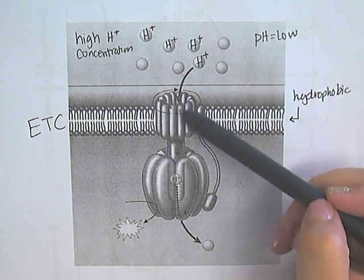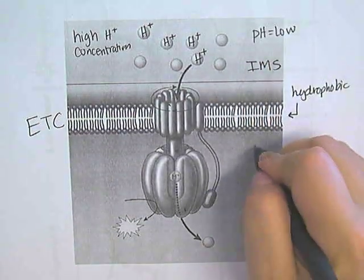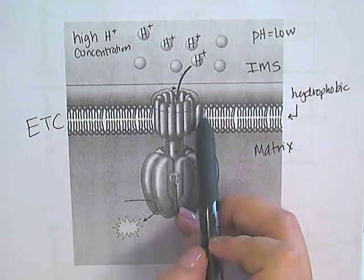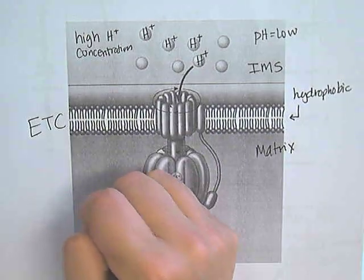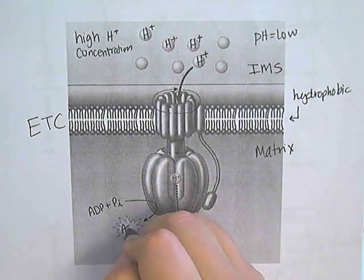So as the hydrogen is moving down its concentration gradient from the inner membrane space to the matrix, it's going to cause this to spin, and that's going to provide the energy that's needed to phosphorylate ADP with inorganic phosphate into ATP.